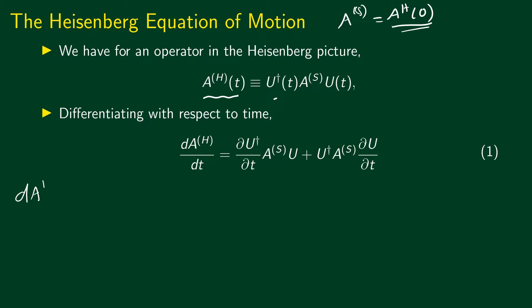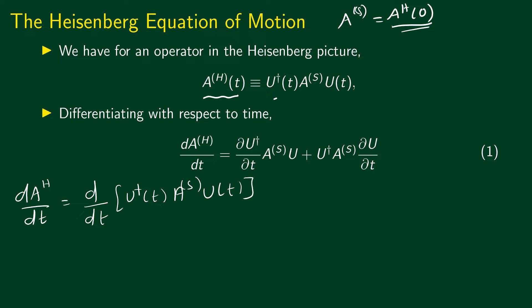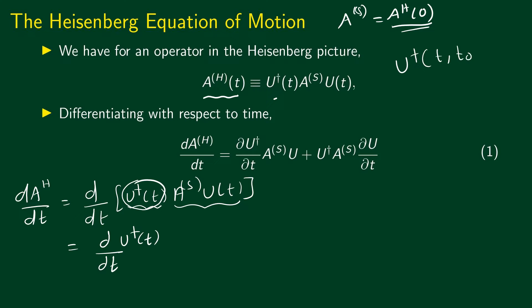The left hand side is written as dA_H/dt. This is equal to the time derivative of U†(t) A_s U(t). Here we have a product of functions, so we have to use the product rule. We get the derivative of the first function multiplied by the second function, and I write the derivative of the first function as a partial time derivative.